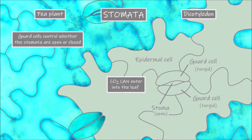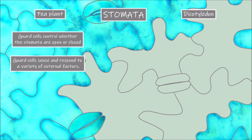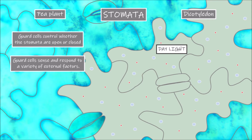How does this work? Guard cells sense and respond to a variety of external factors to the plant including temperature and relative humidity. But the main external factor these guard cells react to is light, both the intensity and quality of light. In response to external factors that are in favour of stomatal opening, such as good light levels during daytime, a series of reactions occur within the cell that cause potassium molecules to be taken into the guard cell.